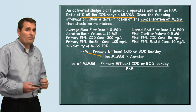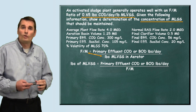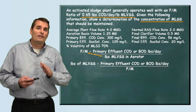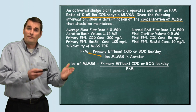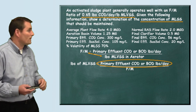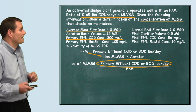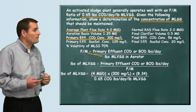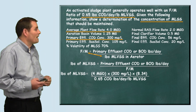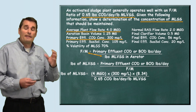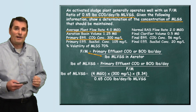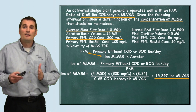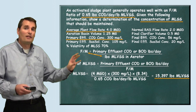Now we need to find our pounds per day of COD and divide it by the F to M ratio they gave us. We take our 4 million gallons per day — the plant flow — times 300 milligrams per liter, which is our COD concentration, times 8.34, and divide by the F to M of 0.65. This gives us 15,397 pounds of mixed liquor volatile suspended solids — these are the volatile pounds.